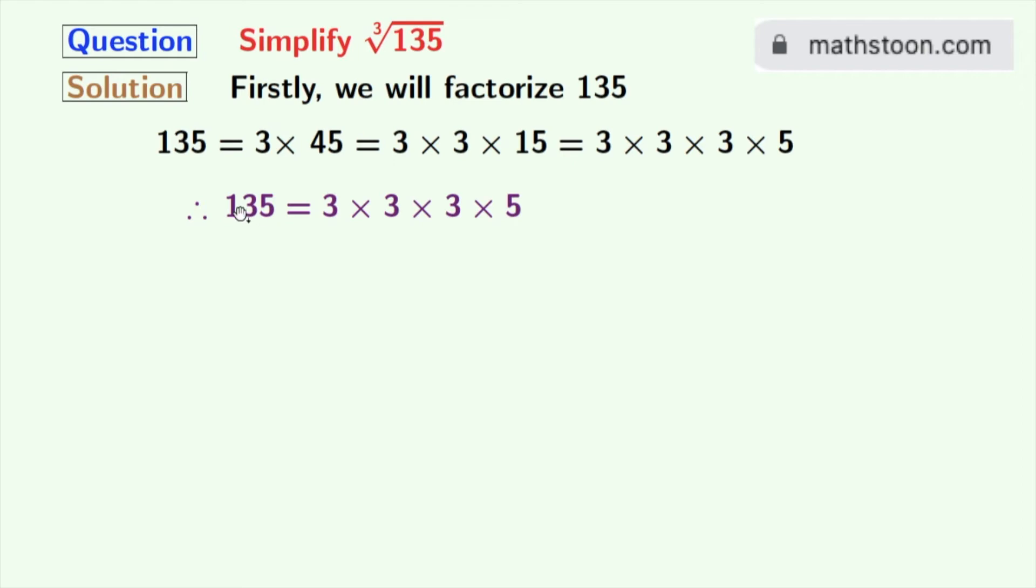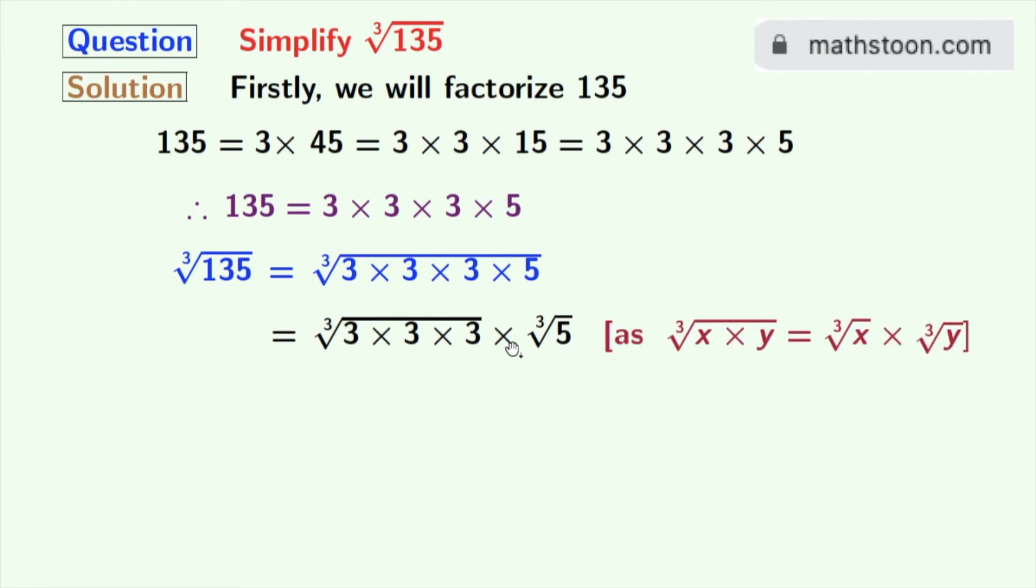Now we will take cube root on both sides. Taking that, we get cube root of 135 equals cube root of 3 times 3 times 3 times 5. After grouping on the right hand side, we get cube root of 3 times 3 times 3 times cube root of 5. As we know that cube root of x times y equals cube root of x times cube root of y.